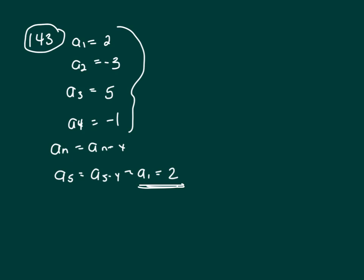So what it's going to do is repeat 2, negative 3, 5, negative 1 again. So let's find the sum of 2 plus negative 3 is negative 1. Negative 1 plus 5 is 4. 4 minus 1 is 3.